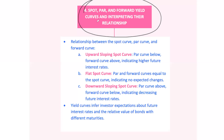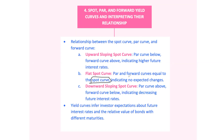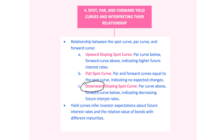To wrap things up, let's talk about how the three curves — spot, par, and forward — relate to each other. When the spot curve is upward sloping, the par curve sits below it and the forward curve is above it, signaling expectations for rising future interest rates. When the spot curve is flat, the par and forward curves are generally equal to it, indicating no major changes in interest rates are expected. When the spot curve is downward sloping (inverted), the par curve is above the spot curve and the forward curve is below it, suggesting a decline in future interest rates. Think of an upward sloping curve as the market saying 'we think things will heat up,' a flat curve as 'no big changes ahead,' and an inverted curve as 'batten down the hatches, we see a storm coming.'